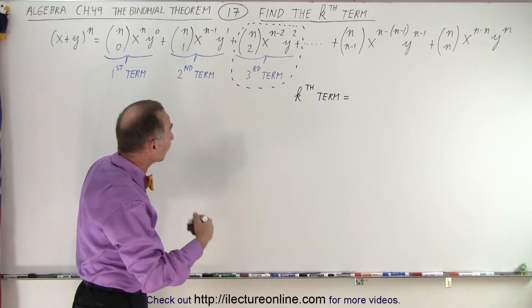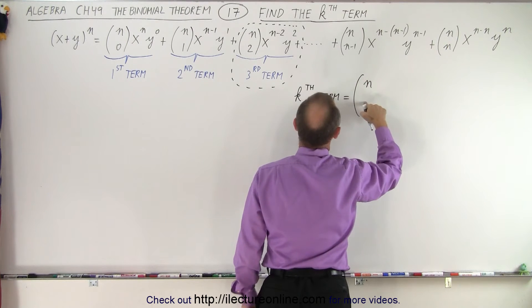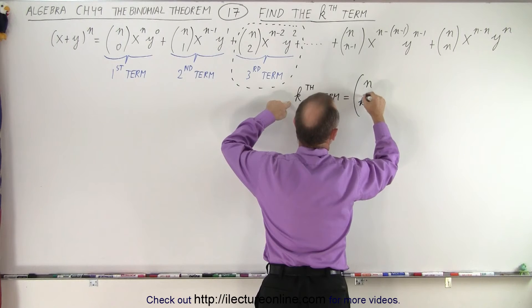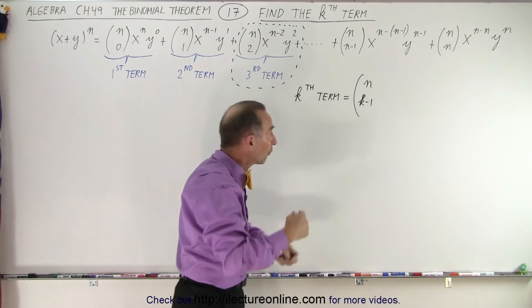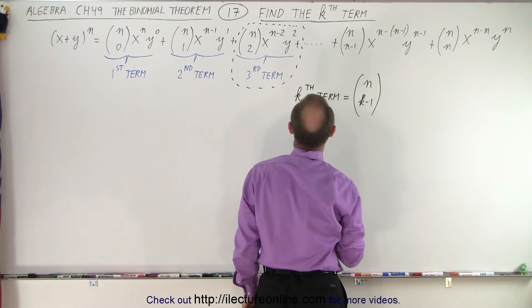we can conclude that if we want to find the kth term, we're going to have n choose (k-1). It's not divided by—I shouldn't say that—it's n choose (k-1), and we know how to expand that using factorials.